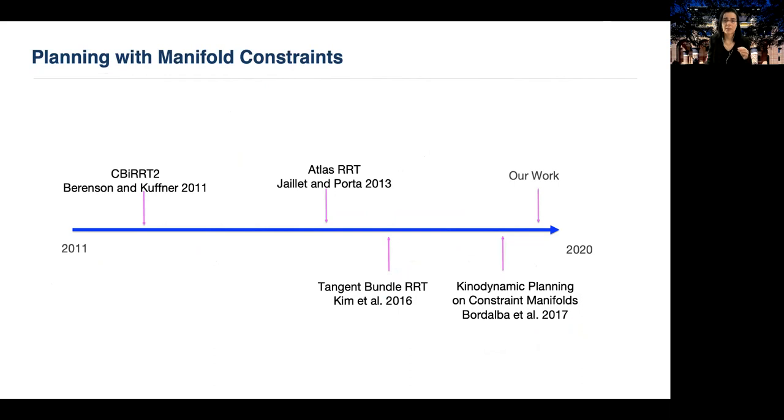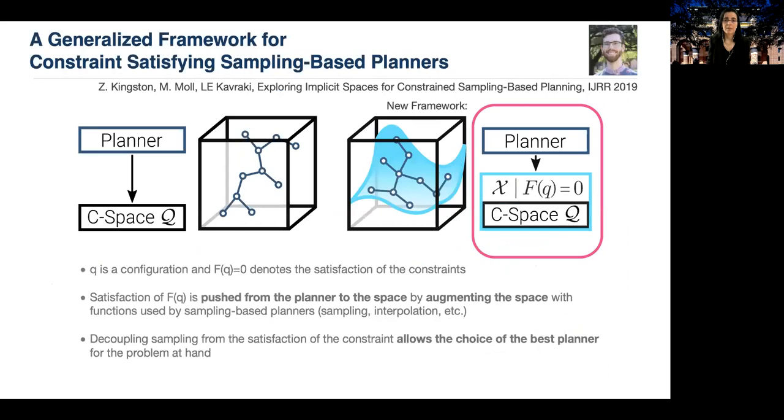Several prior works are augmentations of sampling-based planners and combine search methodology with constraint satisfaction. This means that once you are using a particular planner, you are also bound to a particular planning strategy, which may or may not be good for the problem at hand. Inspired by the OMPL philosophy, Zach Kingston pushed the satisfaction of a constraint from the planner to the search space by augmenting the space with functions used by sampling-based planners, that is sampling and interpolation functions that OMPL implements.